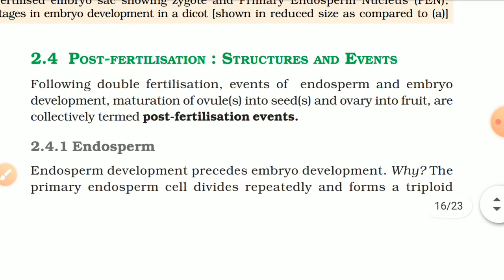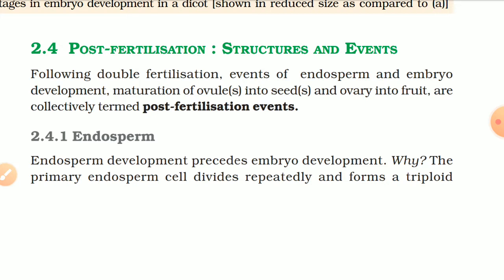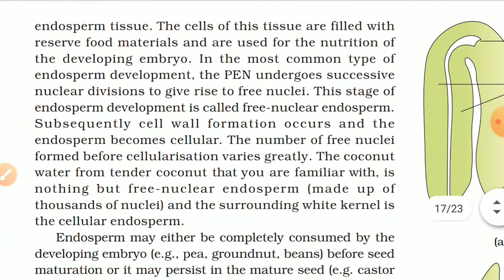Following double fertilization, events of endosperm and embryo development, maturation of ovules into seeds, and ovary into fruit are collectively termed post-fertilization events. Endosperm development precedes embryo development. The primary endosperm cell divides repeatedly and forms a triploid endosperm tissue filled with reserve food material used for the nutrition of the developing embryo. In the most common type of endosperm development, the PEN undergoes successive nuclear divisions to give rise to free nuclei — this stage is called free nuclear endosperm. Subsequently, cell wall formation occurs and the endosperm becomes cellular. The coconut water from tender coconut is nothing but free nuclear endosperm made up of thousands of nuclei.